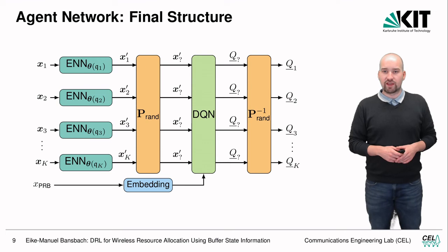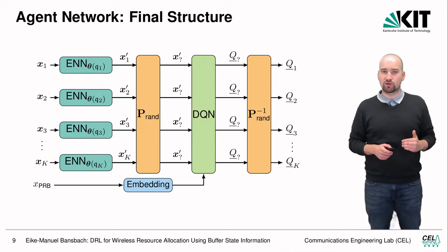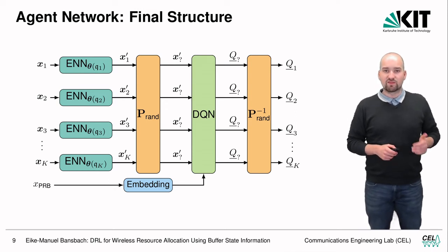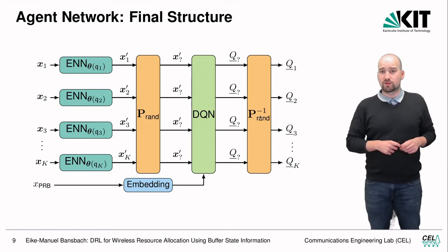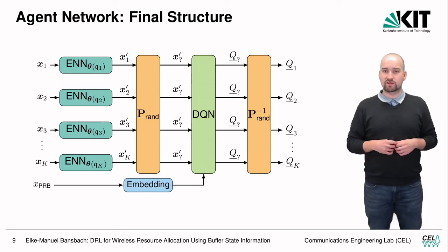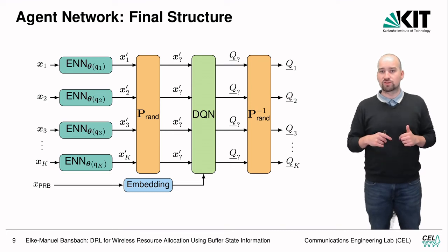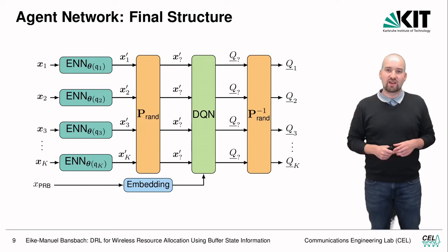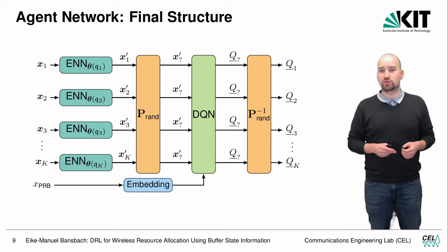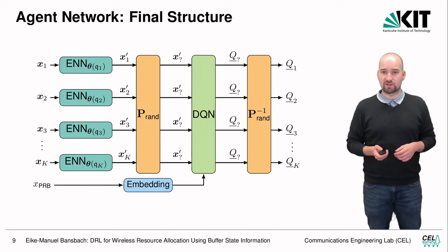The final agent network structure begins with input vectors containing all state space information for users 1 to K, followed by compression via the encoder neural network and permutation by the permutation matrix. The DQN then estimates Q-values — the expected reward for each action. The order is restored via the inverse permutation, yielding Q-values for each user equipment. For physical resource block identity, we use one-hot vector encoding followed by an embedding layer for compact representation.